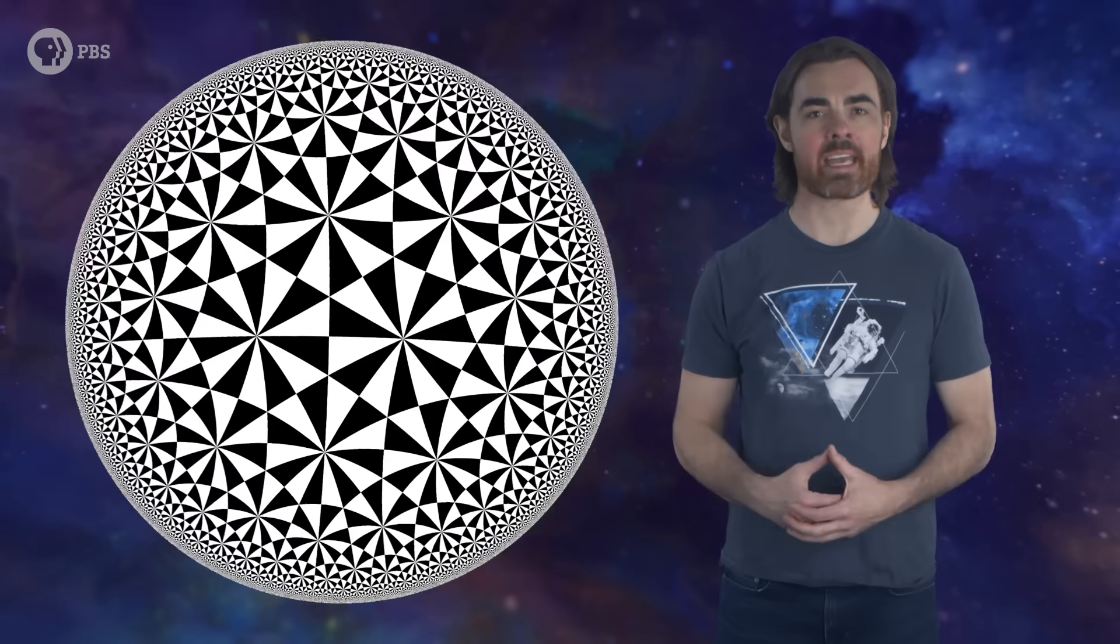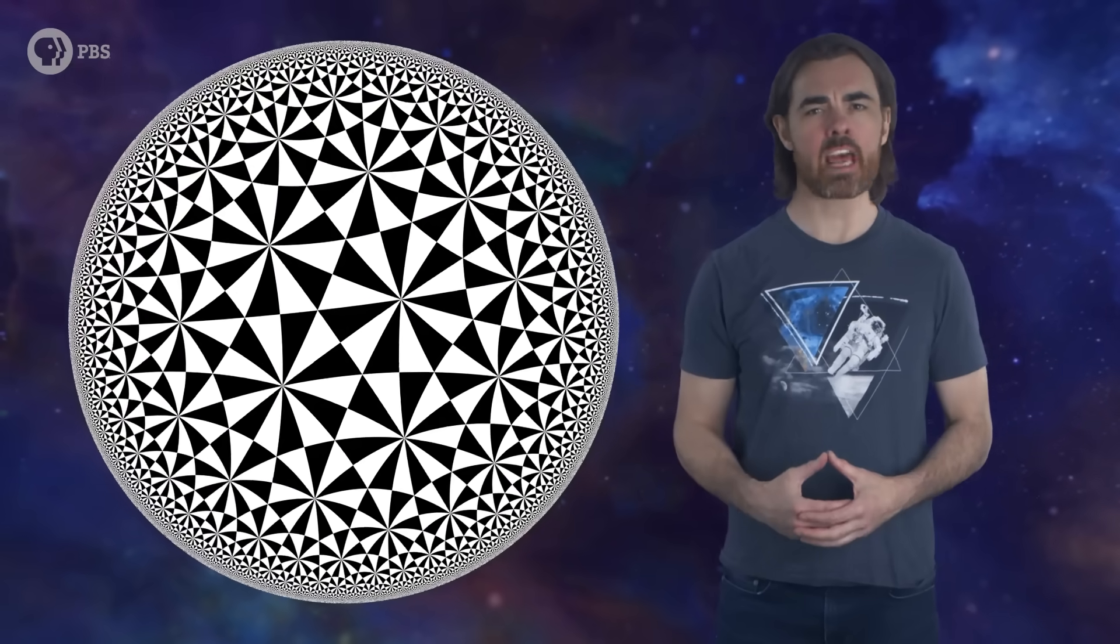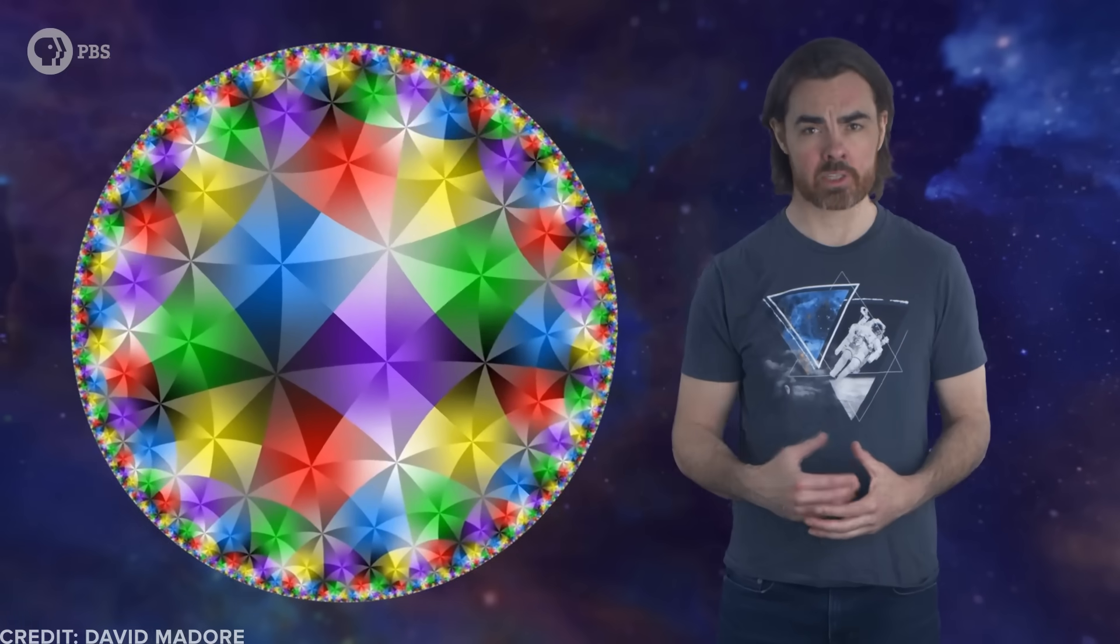This is an example of tessellation – tiling a space with regular, repeated shapes. Hyperbolic space is fascinating because there are literally infinite ways it can be tessellated with regular polygons, while spheres and flat space each only have a small finite number of possible tessellations.